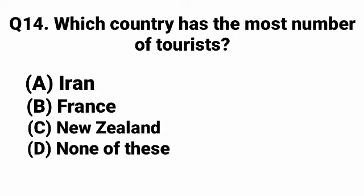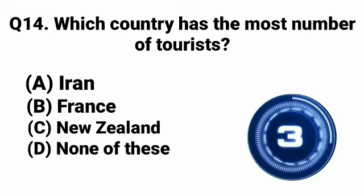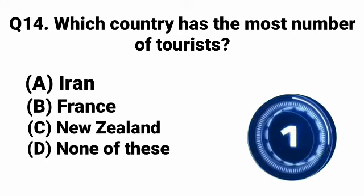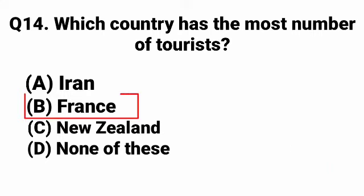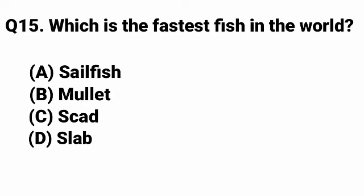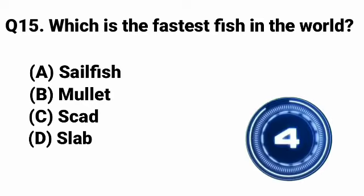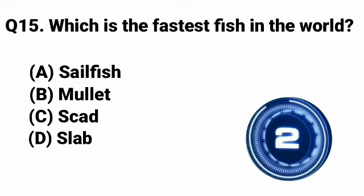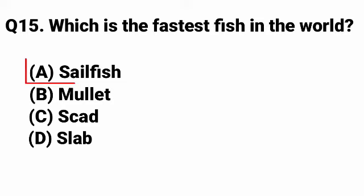Question 14: Which country has the most number of tourists? Answer: Option B - France. Question 15: Which is the fastest fish in the world? Answer: Option A - Sailfish.